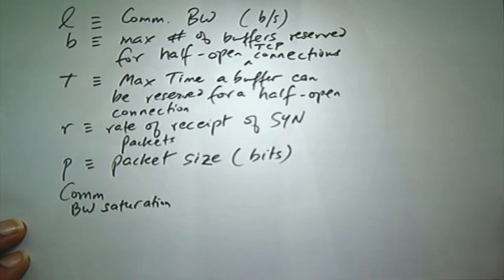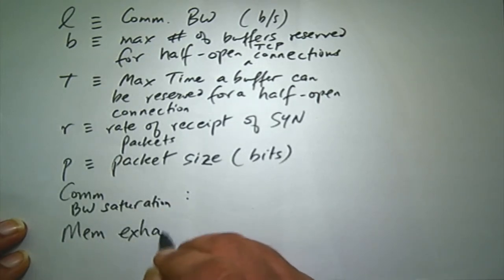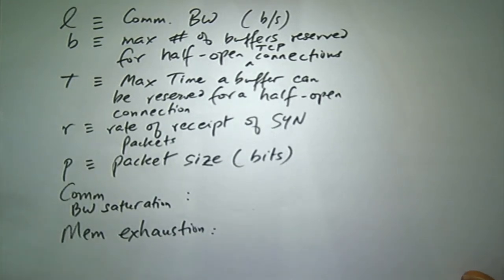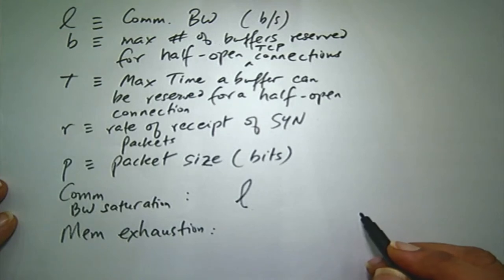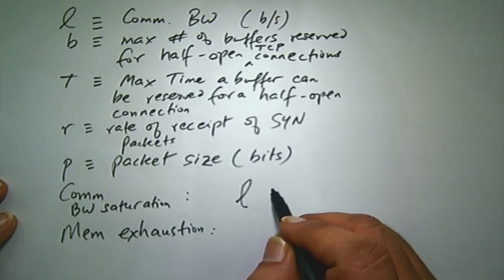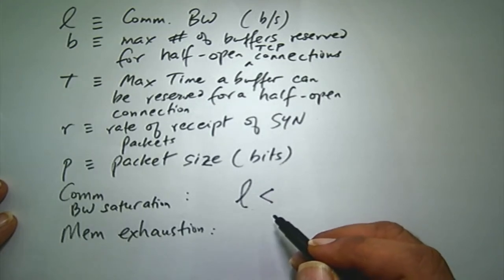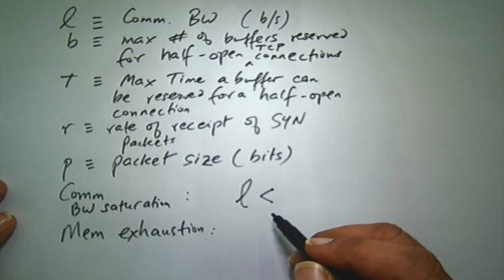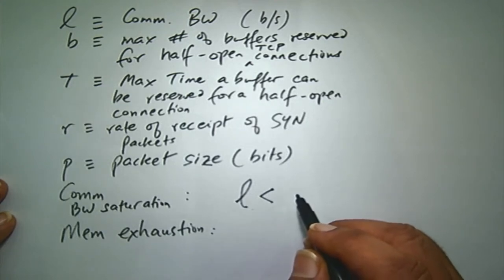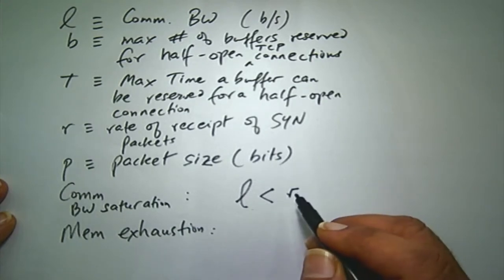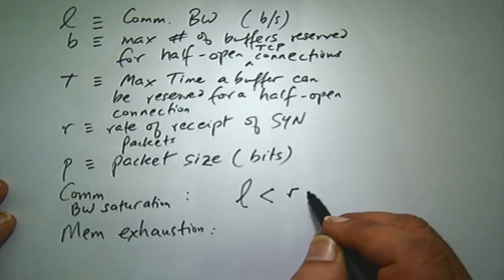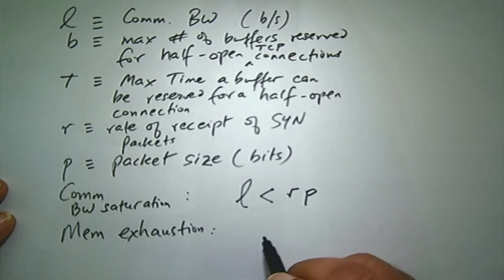What is the condition for saturating the communication link? It's a simple algebraic equation: not enough communication capacity. R × P — the aggregate rate of packets coming in and bombarding the victim, multiplied by the packet size in bits — must exceed L. And what about memory exhaustion?